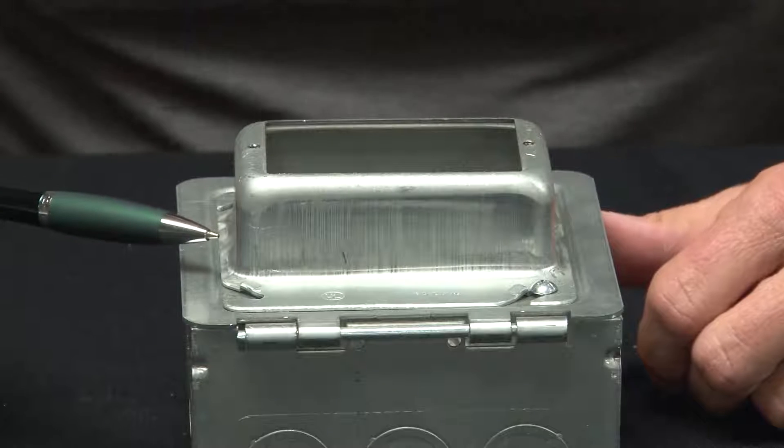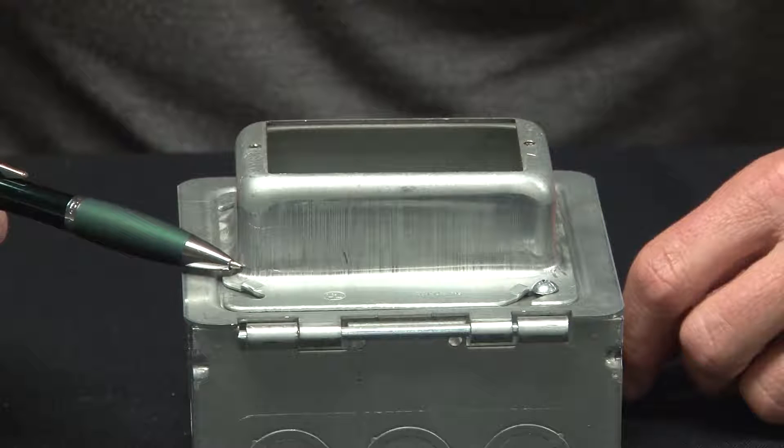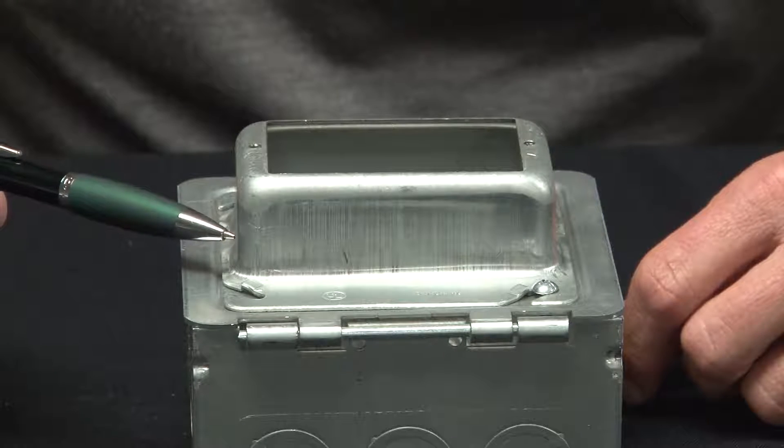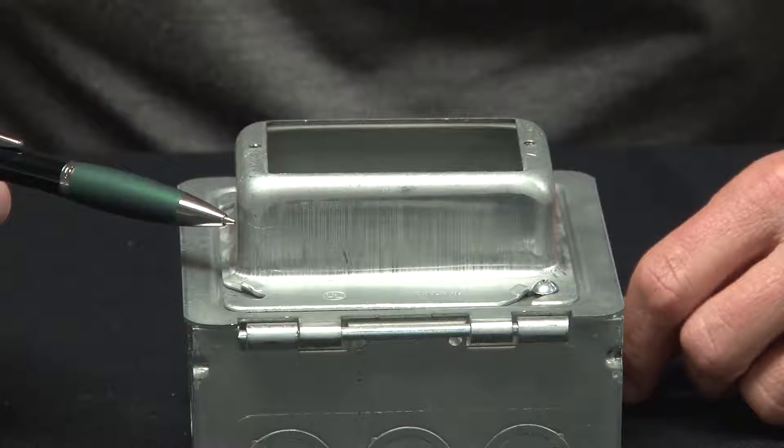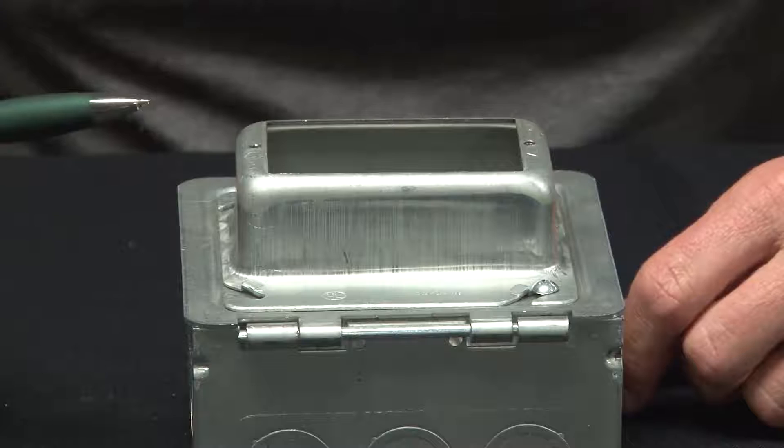These hinged prefab boxes come with a one-gang device ring that is raised half inch, five-eighths, three-quarter, one inch, inch and a quarter, inch-and-a-half, or two inch for tile, drywall, or plaster.